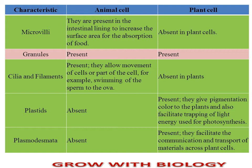Plastids are the main site for photosynthesis and are specifically present in plant cells — they are absent in animal cells. Plasmodesmata is another structure present only in plant cells, which helps in communication and transport of materials across plant cells, and is absent in animal cells.